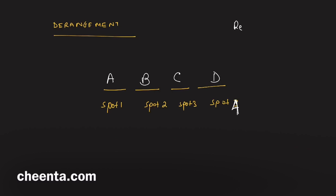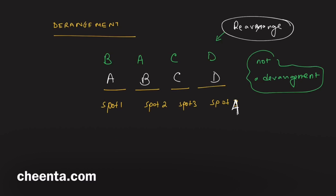One way to do it is maybe something like this: B, A, C, D. This is definitely a rearrangement of the letters ABCD, but this is not a derangement. Why is it not a derangement? To be a derangement, none of the letters should be in their original spot.